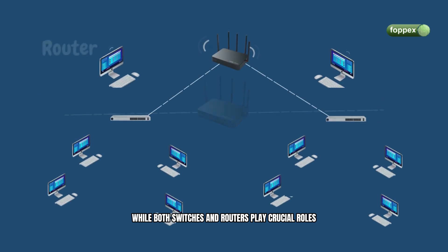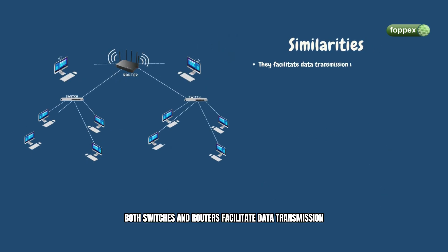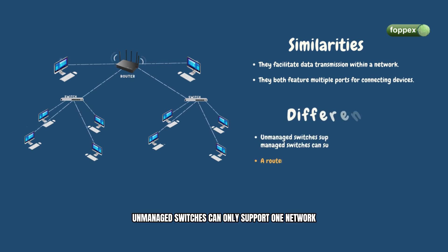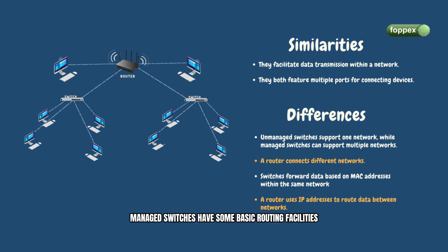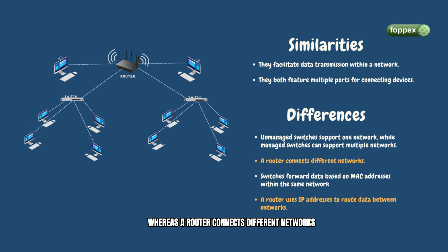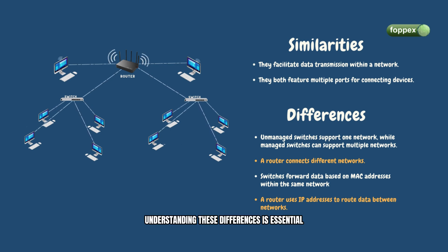In summary, while both switches and routers play crucial roles in networking, they have distinct functions. Both facilitate data transmission within a network and feature multiple ports for connecting devices. Unmanaged switches can only support one network, while managed switches have basic routing facilities like VLAN tagging, enabling them to support multiple networks, whereas a router connects different networks. Switches forward data based on MAC addresses within the same network, while routers use IP addresses to route data between networks. Understanding these differences is essential for designing and maintaining efficient computer networks.